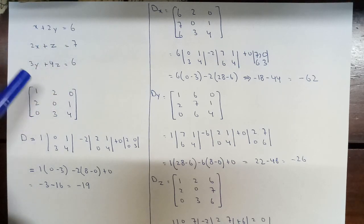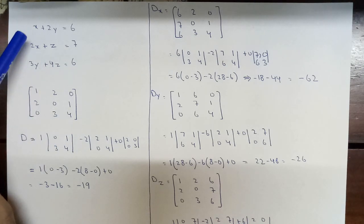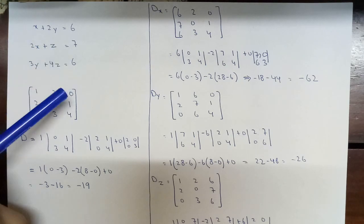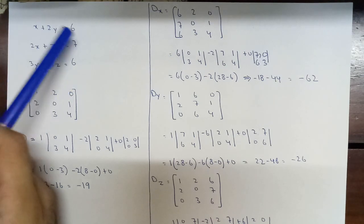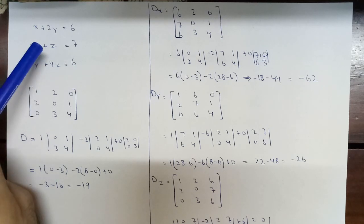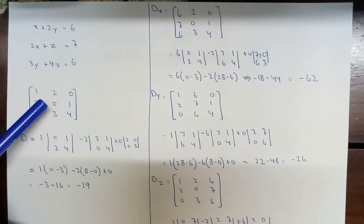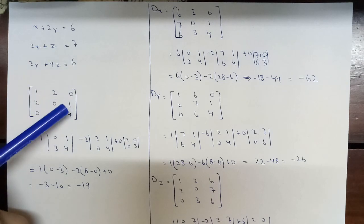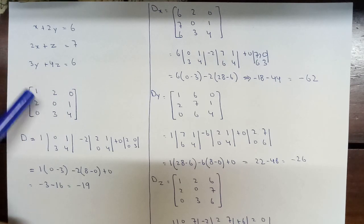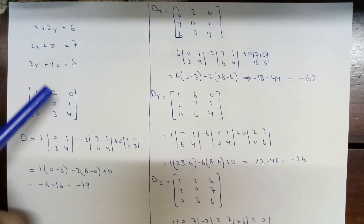First of all we have to write down the coefficients in matrix form. The coefficient of x is 1 and the coefficient of y is 2, and the coefficient of z is 0 because there is no z in this equation. In the second equation, the coefficient of x is 2, the coefficient of y is 0, and the coefficient of z is 1. In the third equation there is no coefficient of x, so it will be 0, the coefficient of y will be 3 and the coefficient of z is 4.